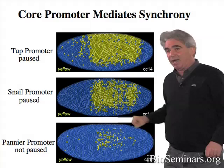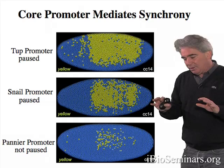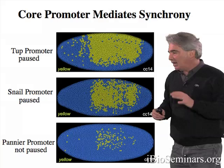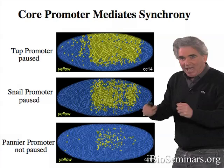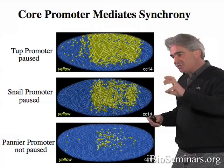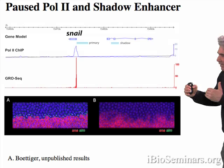It turns out that many of the most critical embryonic patterning genes contain both paused polymerase and shadow enhancers. I want to show evidence that this combination of paused polymerase and shadow enhancer is a potent one-two punch for rapid, synchronous, robust, precise patterns of gene expression that also produce very high rates of RNA synthesis. I'm going to come back to our old friend the snail gene to illustrate this point.